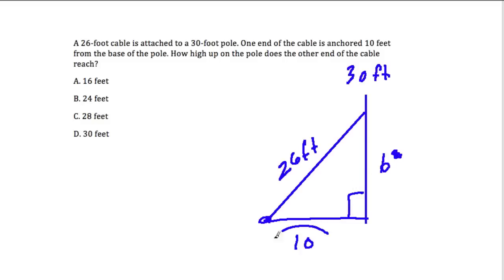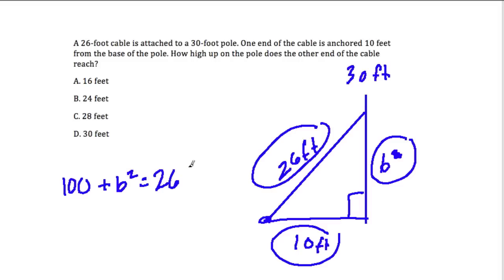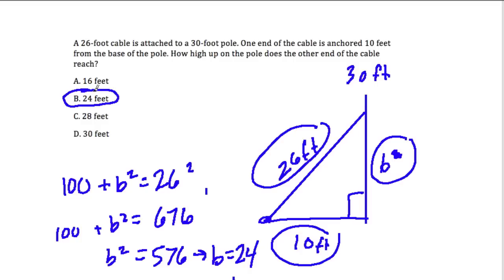So we have our right triangle. Here's one leg squared plus the other leg squared has to equal our hypotenuse squared. So let's set that up. We've got 100, which is 10 squared, plus B squared equals 26 squared. 26 times 26, 676 equals B squared plus 100. Subtract 100 from both sides, and B squared is 576. So therefore, B is the square root of 576, and the square root of 576 is the perfect square, it's 24. And there's our answer. So it goes up 24 feet on the pole.